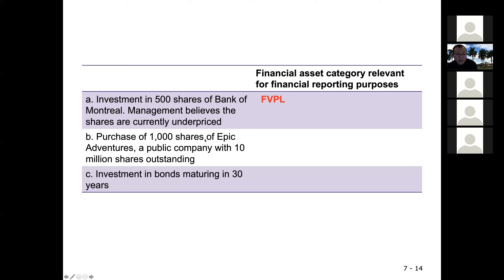Next one: purchase of 1,000 shares of Epic Adventures, a public company with 10 million shares outstanding. FVPL again — because this is shares, it's non-strategic. 1,000 versus 10 million — that's a very small percentage of ownership.